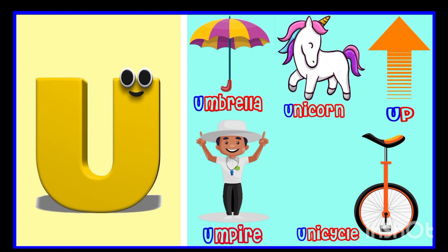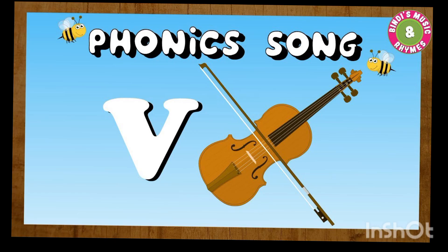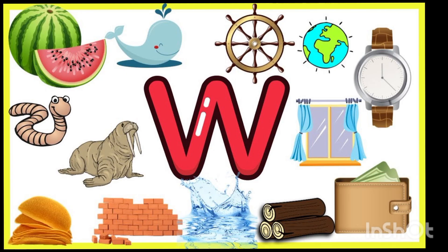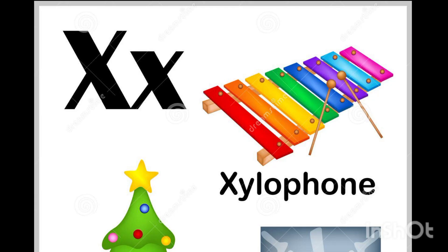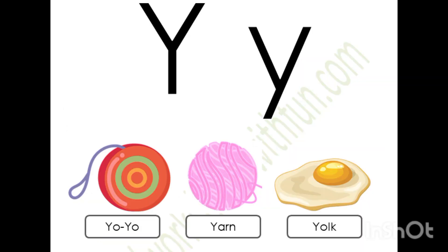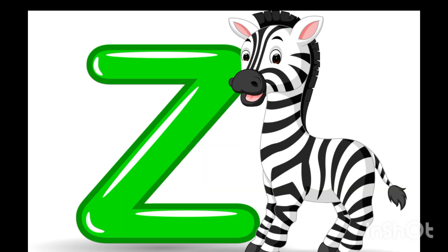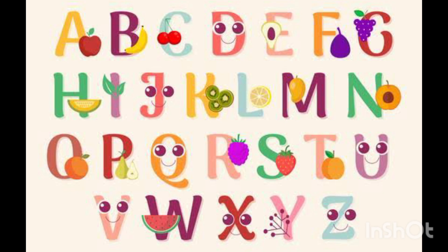U-a, umbrella. V-a, violin. W-a, windy. X-x, box. Y-a, yellow. Z-a, zebra. Great job!